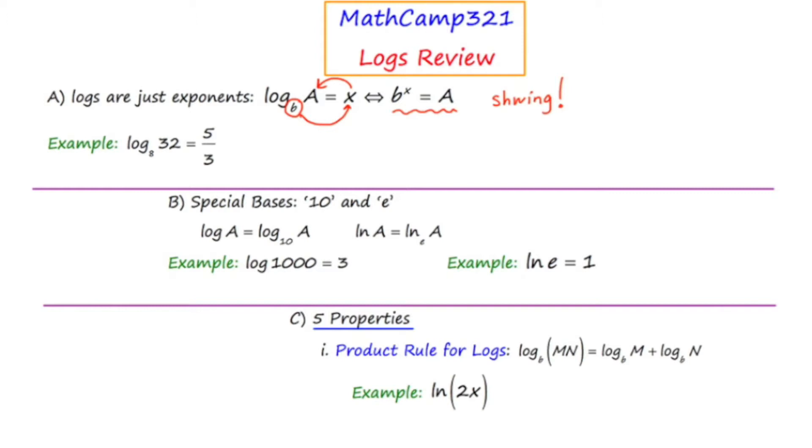So let's do a quick example. If I were to convert this logarithmic equation into an exponential equation, and I do a quote-unquote schwing, I would start down here at the 8, I'd raise it to the power of 5 thirds, and then hopefully my answer would be 32.